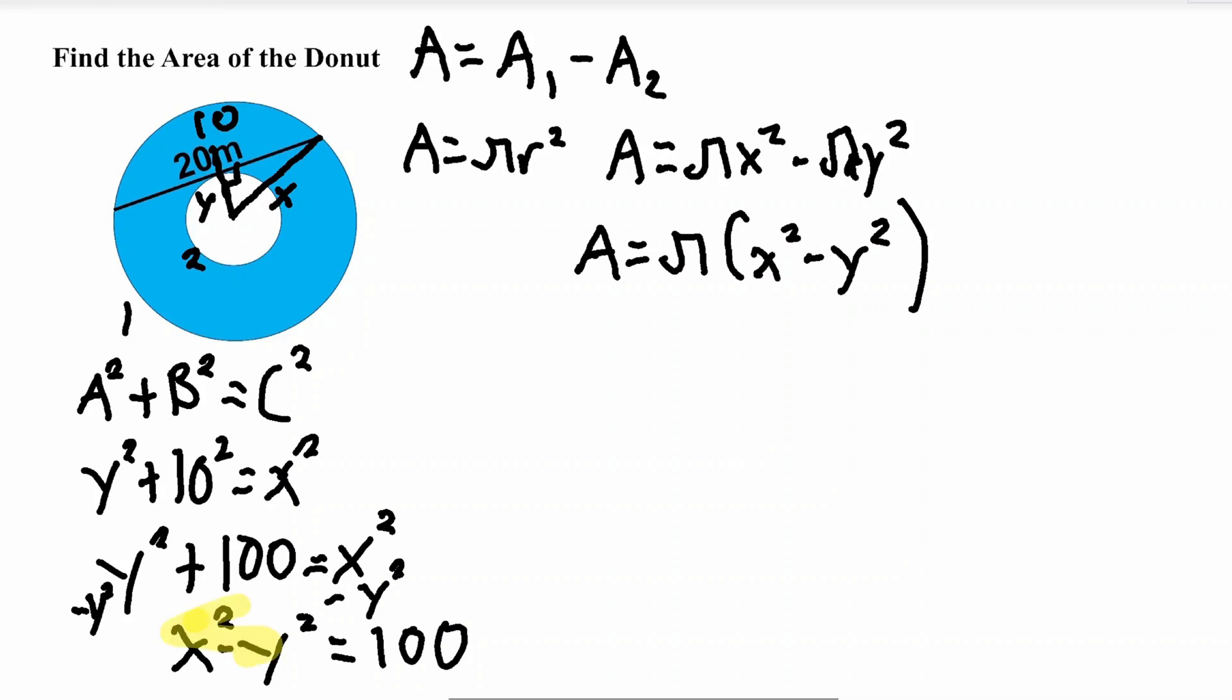And now if you see here, this x squared, x squared minus y squared is also present here, which means we are able to substitute the value of this which is 100 into this part here.